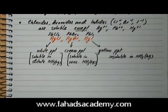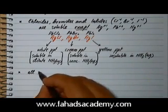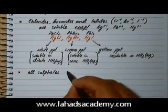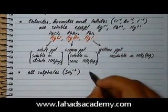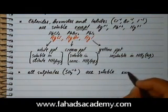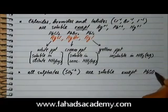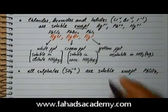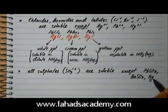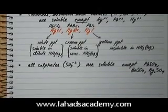Now let's move on to sulfates. Sulfates are any salts which have SO4²- in them. All sulfates are soluble except lead sulfate PbSO4, barium sulfate BaSO4, and silver sulfate Ag2SO4, which are insoluble. All the rest are soluble.